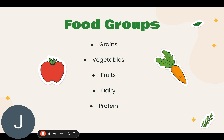Dairy includes all fluid milk products, yogurt, and cheese. Protein foods are made from meat, poultry, seafood, eggs, processed soy products, nuts, and seeds. Beans and peas are also in this group, and they're also in the vegetable group.